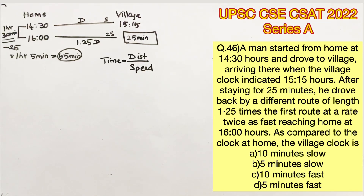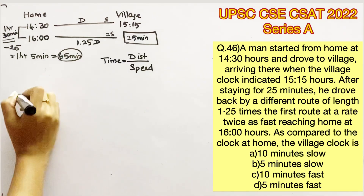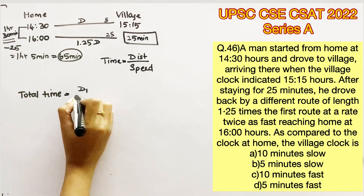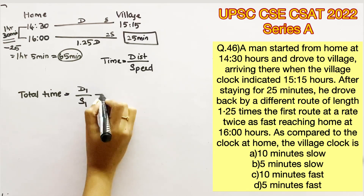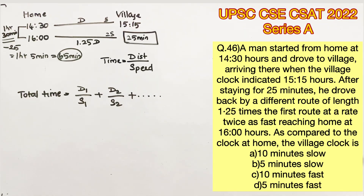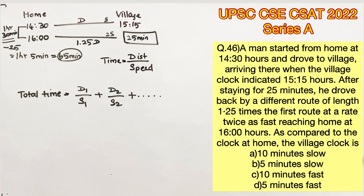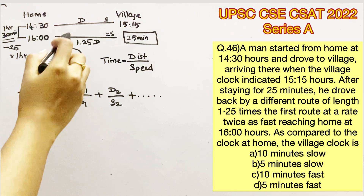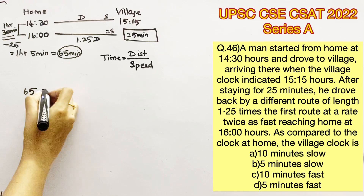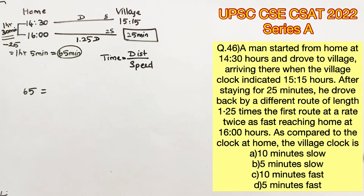We know that time equals distance divided by speed. When different distances are traveled at different speeds, the total time is calculated by adding the individual times: D1/S1 + D2/S2 + D3/S3, and so on. Applying this to our problem: distance D is traveled at speed S, and distance 1.25D is traveled at speed 2S, with a total time of 65 minutes.